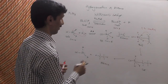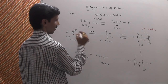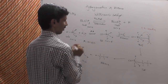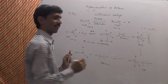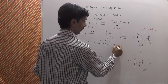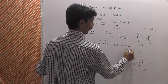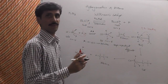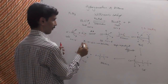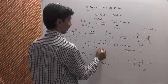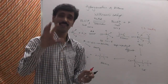The limitations of Wilkinson's catalyst are: first, it is a soluble catalyst, and therefore separation from the product is difficult. If sophisticated techniques are used for separation, there is a possibility of loss of rhodium. Second, this process is costly. These are the two main disadvantages of Wilkinson's catalyst.